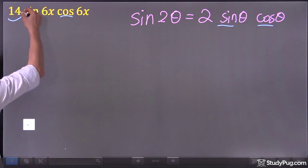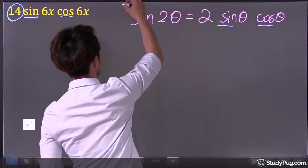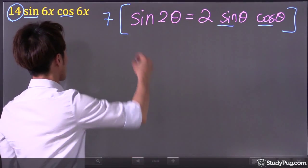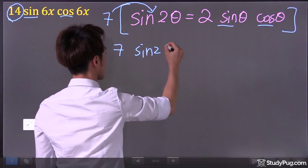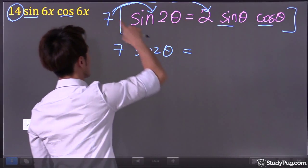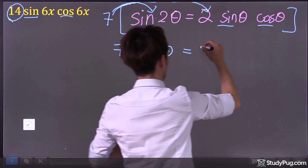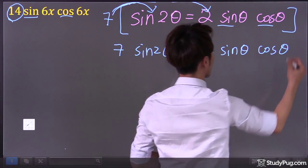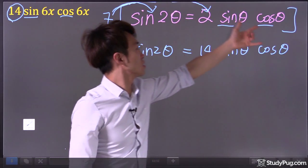But now, look, the number in front is 14. Now here we only have two though. So you know what we do? Multiply the whole expression by seven. So multiply this in, we get seven sine two theta equal, and multiply this in to the right side of the equation. So seven times two, we have 14. Sine theta, cosine theta, right?